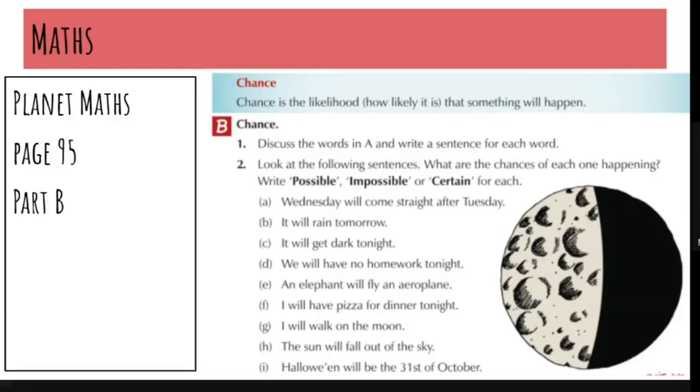So if something is possible, that means that it might happen, but it might not happen. If something is impossible, it means it definitely won't happen.